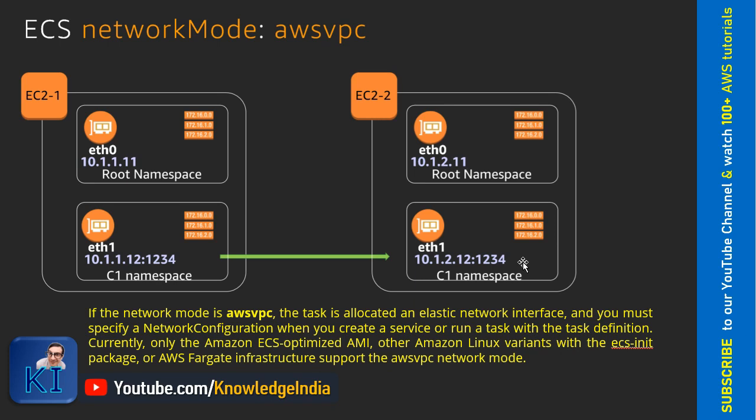Within an EC2 instance, if you have three or four containers running, no problem — all of them will have their own IP address, and you can attach different security groups to every container because security groups get associated at the ENI level. Each container now controls on which port it will accept traffic, and it does not need to depend on that one common bridge point at the host level as in Bridge mode.